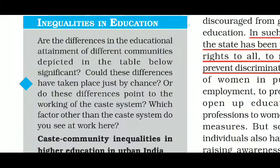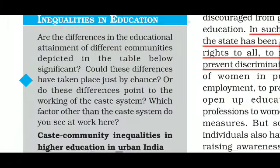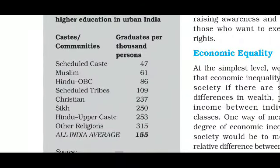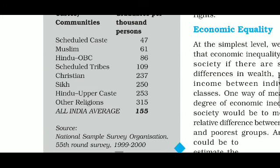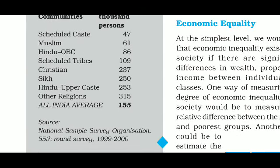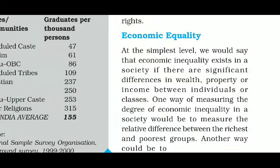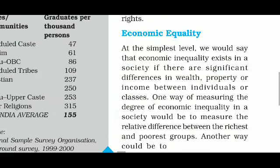The differences in educational attainment of different communities are shown in the table as graduates per thousand. In Scheduled Castes there are only 47, in Muslims around 60, in Hindu OBC 86, in Scheduled Tribes 109, in Christians 237, in Sikhs 250, in Hindu upper caste 253, and in other religions 315. The all-India average is around 155. You can see that educational inequality is quite significant.